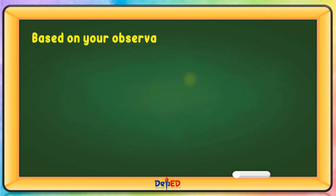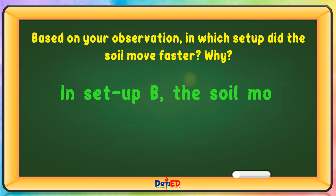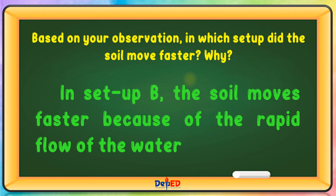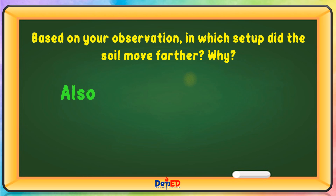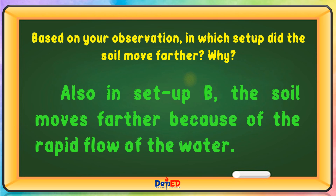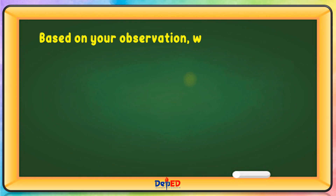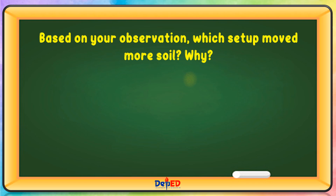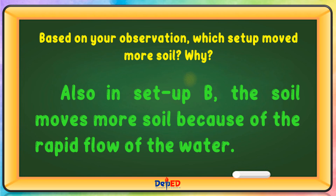Based on your observation, in which setup did the soil move faster? In setup B, the soil moves faster because of the rapid flow of the water. In which setup did the soil move further? Also in setup B, the soil moves farther because of the rapid flow of the water. Setup B also moved more soil because of the rapid flow of the water.